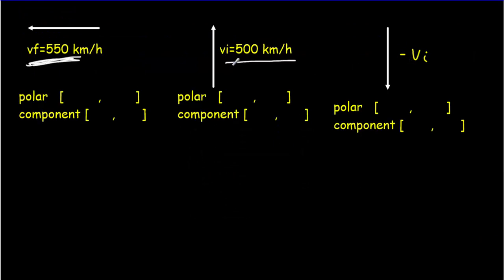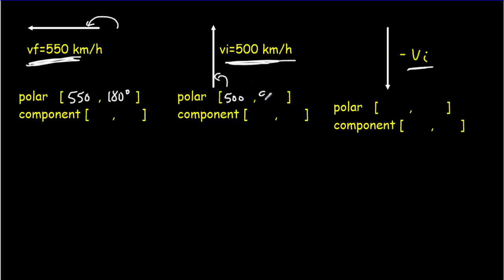I've drawn my two vectors Vf and Vi, and also the opposite of Vi — negative Vi. My first vector has a length of 550. Remember, the length of a vector can never be negative — it's always positive, also called the magnitude. The direction is in the negative x direction, which is 180 degrees. My initial velocity was 500 kilometers per hour to the north, so magnitude is 500 and direction is 90 degrees. The opposite of that vector will be to the south — same magnitude 500, but a heading of 270 degrees, or 90 plus 180 degrees.